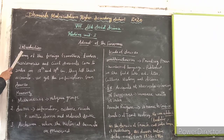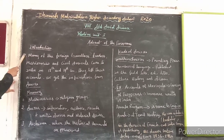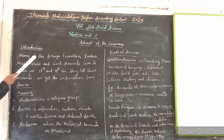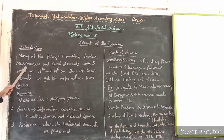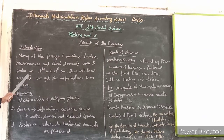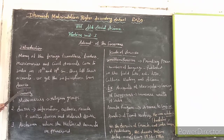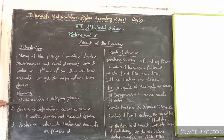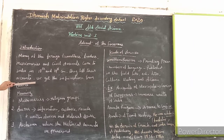Now I am going to give a small introduction about Advent of the Europeans. Many travelers, traders, missionaries, and civil servants came to India in the 18th and 19th century. They left their accounts and we got information from these sources. Missionaries means religious groups. Source means information, evidence, or records.